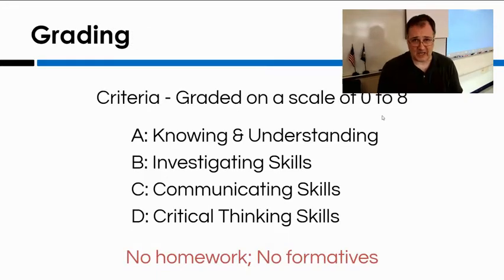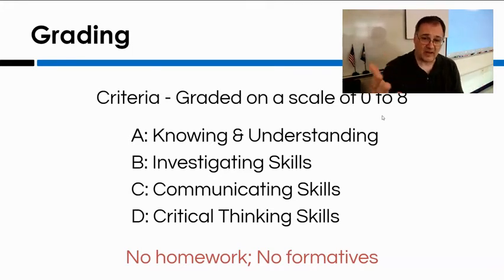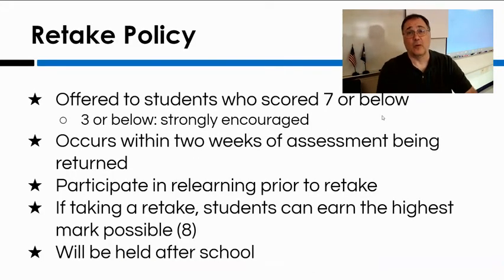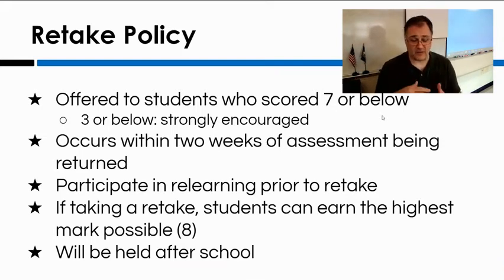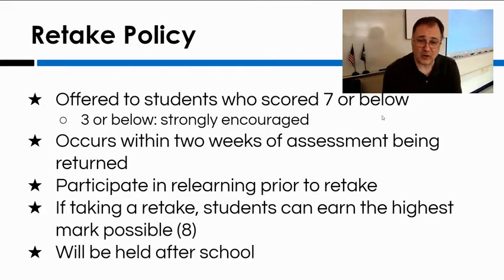Since we are an IB — International Baccalaureate — school, we use the 0 to 8 IB grading scale, with 8 being full mastery and 0 being just barely beginning, across four criteria: knowing and understanding, investigating, communicating, and critical thinking. We don't have homework in 7th grade history, but we do offer retakes. If you score a 3 or below, we're going to encourage it. You have to complete the retake within two weeks of the assessment being returned, and you have to participate in some kind of re-learning. Retakes will always take place after school during the academic block.